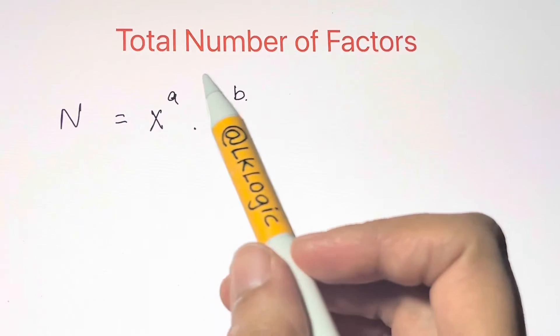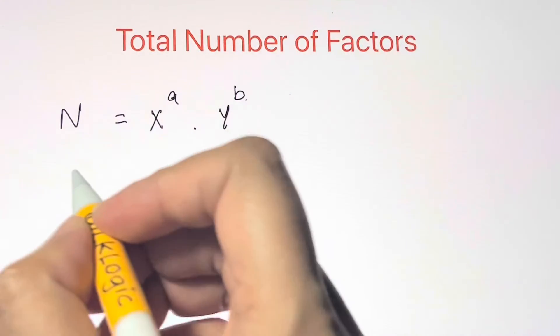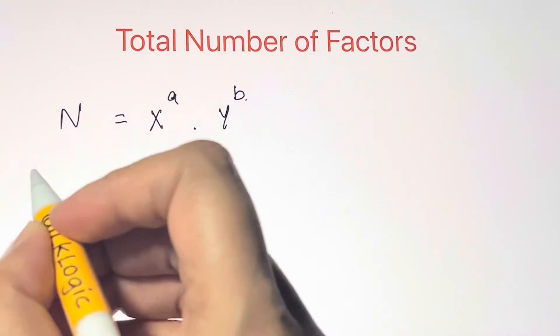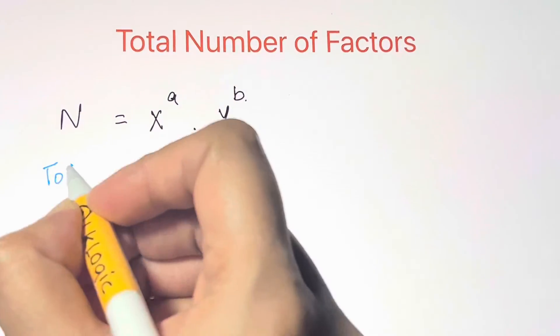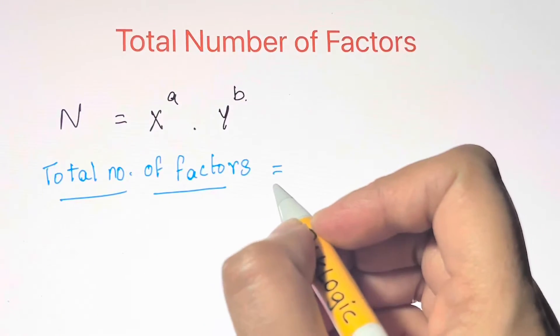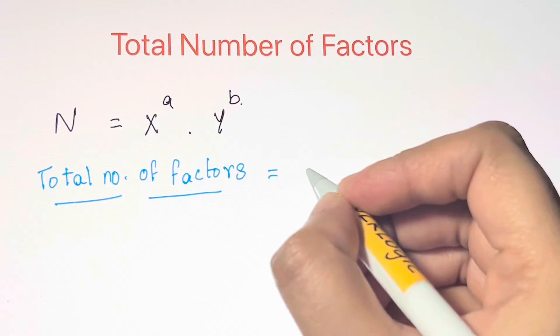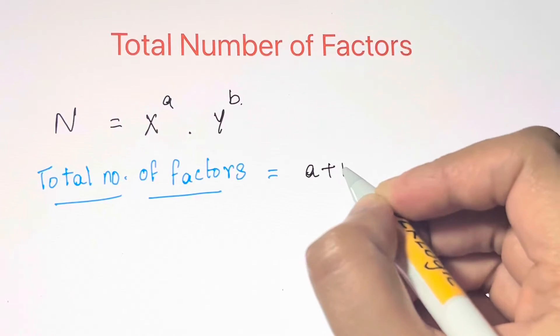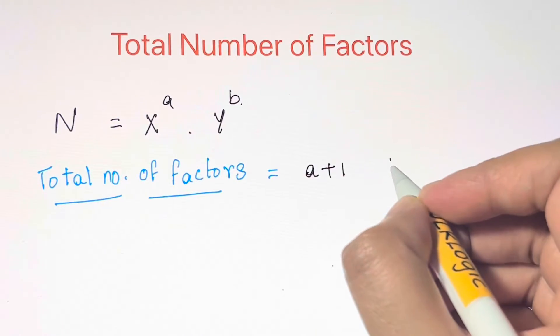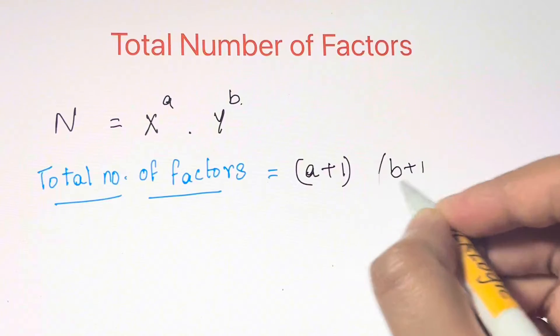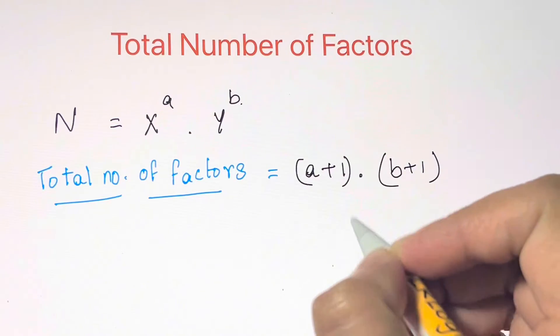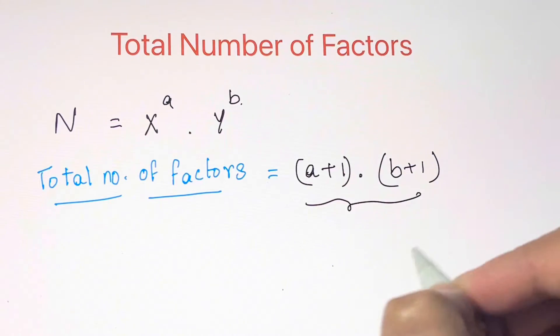That's how you find total number of factors. Total number of factors is given by: we take the exponent a, add one to that, take this exponent b, add one to that, and then multiply them together. That's how you find the total number of factors.